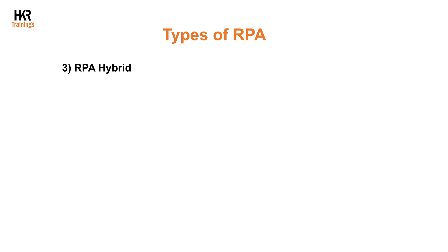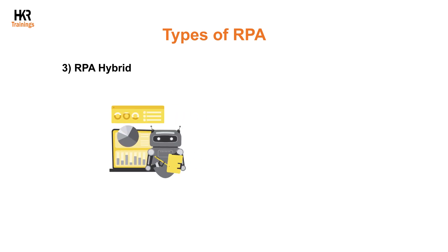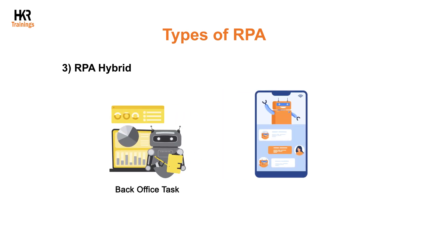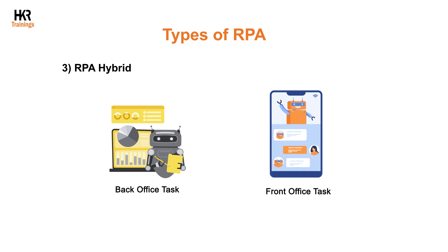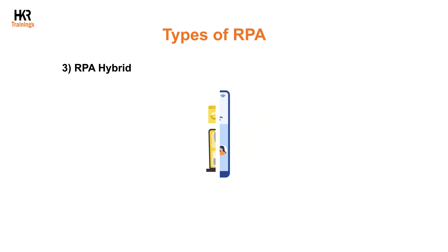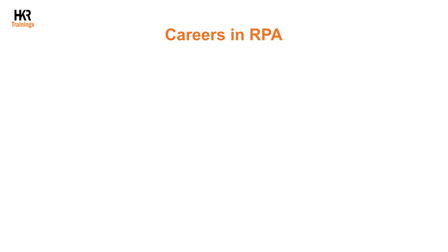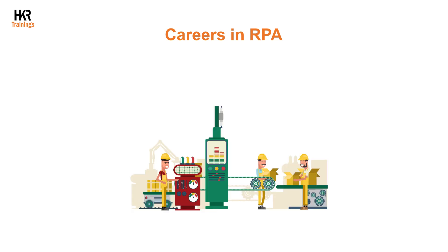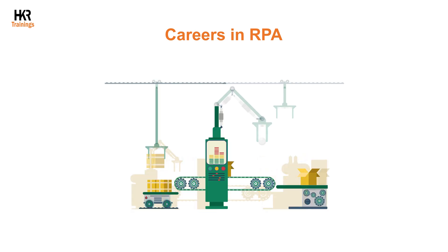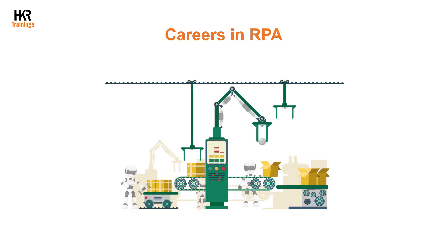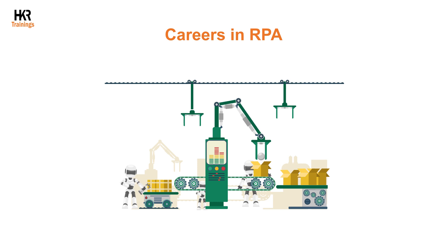Third, hybrid RPA — this kind of RPA combines attended and unattended RPA bots to guarantee that both back-office and front-office tasks are automated, making end-to-end process management possible.